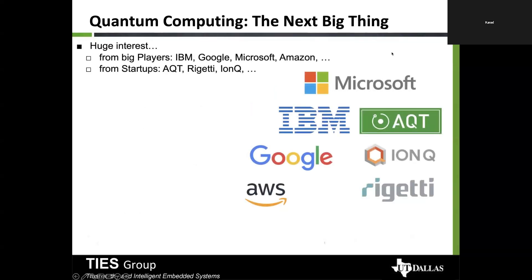Let me introduce the problems. Quantum computing is the next big thing. A lot of big players like Microsoft, IBM, Google, IonQ, Amazon, Rigetti, and AQT are all trying to develop their own quantum computing models. IBM, Google, Microsoft, and Amazon quantum computers are actually used in our research, and it's my personal belief that quantum computers are going to be the next big thing — like what machine learning was in the early 2010s or late 2000s.